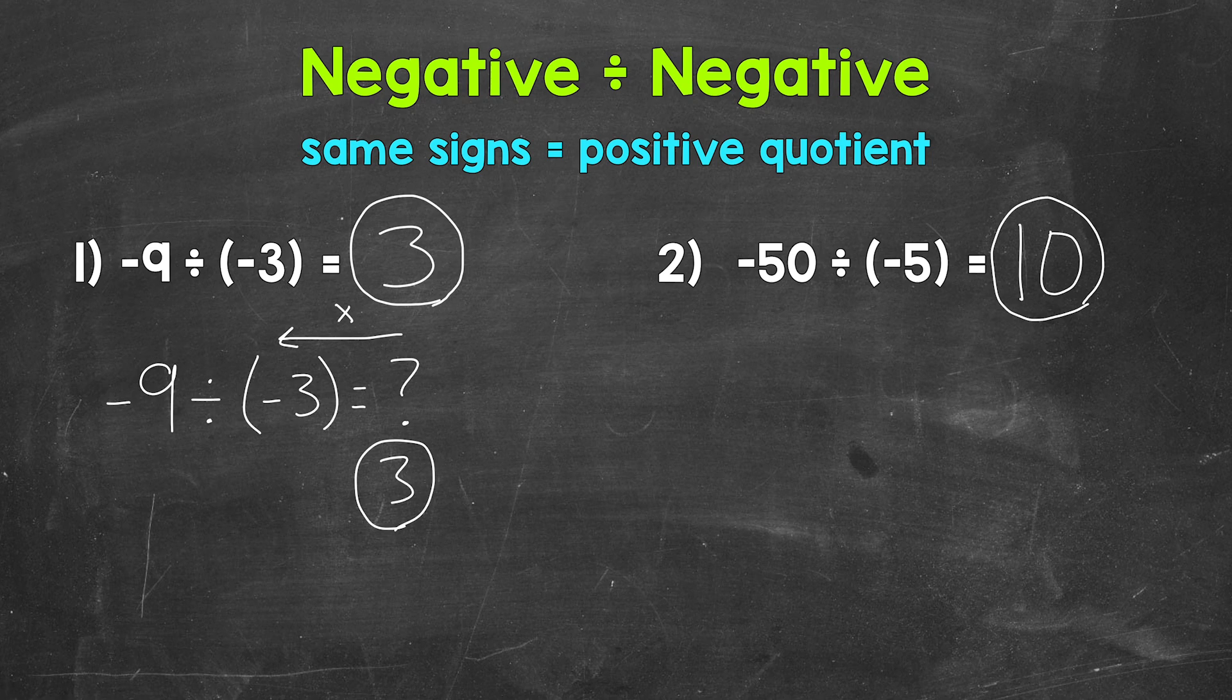Now we can think through this as dividing negative 50 into groups of negative 5. So how many groups of negative 5 are in negative 50? That's going to be our final answer of 10.